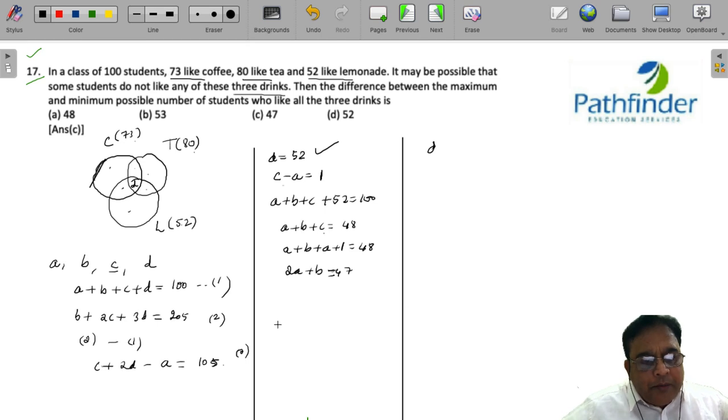Now, what about the minimum number? For minimum value, let us start by taking D is equal to 0. If D is equal to 0, C minus A is 105, which is impossible. Why? Because none of the two values can go beyond 100. So, D is equal to 1, C minus A will be 103, which is again not possible. D is equal to 2, then C minus A must be equal to 101, not possible.